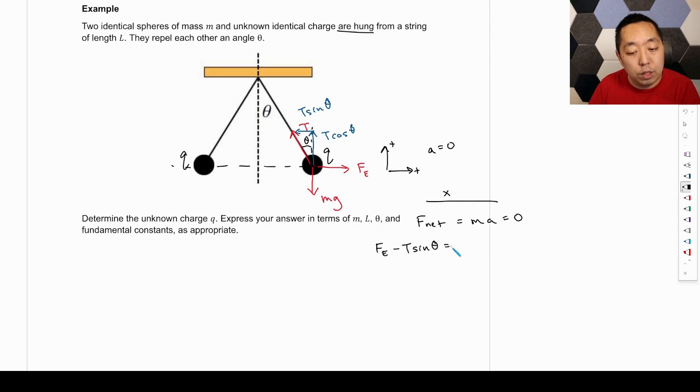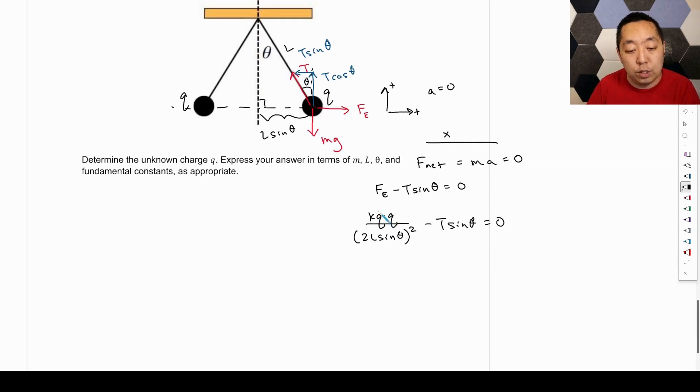That's equal to zero. So the electrostatic force is going to be KQ times Q. They're both Q. Divided by the distance between them. Now this length here is L. And so this length here of this right triangle would be L sine theta. So the distance between them is double that. It's 2L sine theta squared, like that. Minus T sine theta is equal to zero. So that's our first equation. And we're going to solve for Q. But we need to know the tension. So we're going to look at the Y direction.